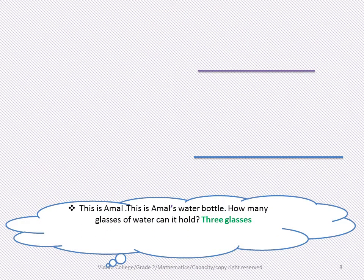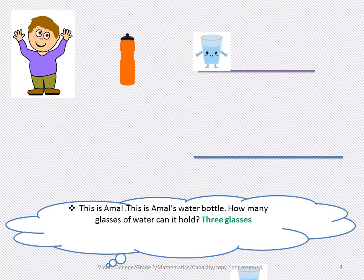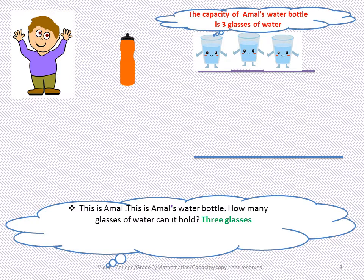This is Amal, and this is Amal's water bottle. How many glasses of water can it hold? One, two, three. The capacity of Amal's water bottle is three glasses of water.